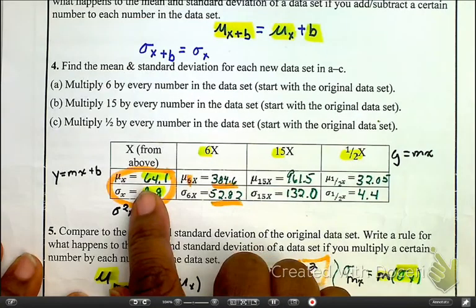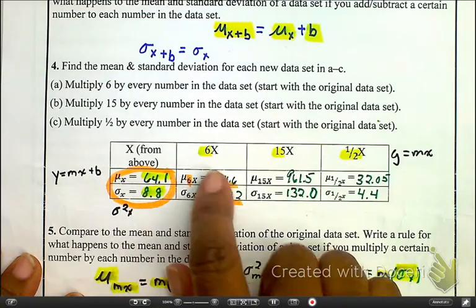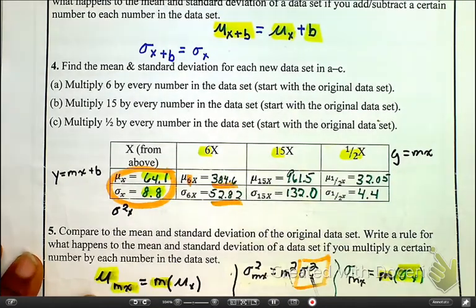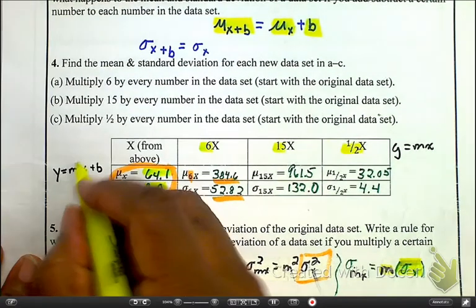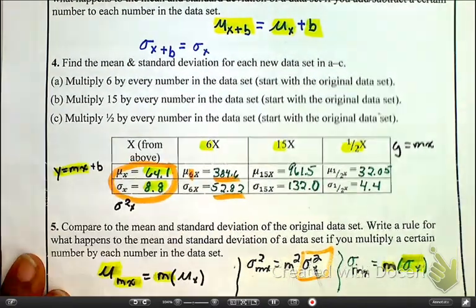Okay, next, we take those same values, find the mean, and we multiply them by something. Okay, think of those as the idea, again, of the slope, the y equals mx plus b.